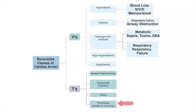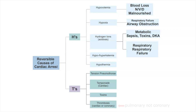The last T is thrombosis — this includes both cardiac and pulmonary. Think of those patients presenting with classic substernal chest pain and shortness of breath. For cardiac patients, we're going to want to get them to the cath lab stat. For pulmonary patients, we're going to want to consider an embolectomy or fibrinolytics.